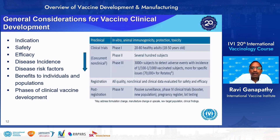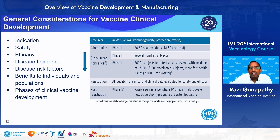The different phases of clinical trials: Phase one is generally for safety and is done in fewer than 100 healthy adults. Phase two is done in a few hundred subjects, mainly establishing safety plus dose-ranging efficacy. Phase three is primarily for safety and also efficacy. After registration, phase four is done for passive surveillance, safety data generation, clinical trials for booster applications, pregnancy registration, and lot testing.